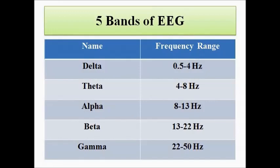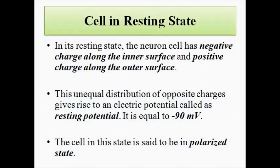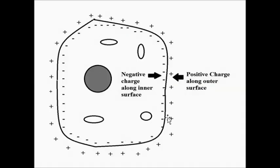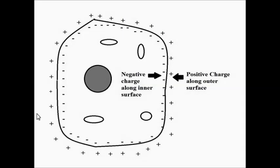Now let us understand how the electroencephalogram works. If we consider a cross-sectional view of a neuron cell, in the resting state the neuron cell has a negative charge along the inner surface and a positive charge along the outer surface. This positioning of opposite charges — cations and anions — produces an electric potential between them, which is the EEG. This potential during the resting state is called the resting potential, and the cell in this state is called polarized.